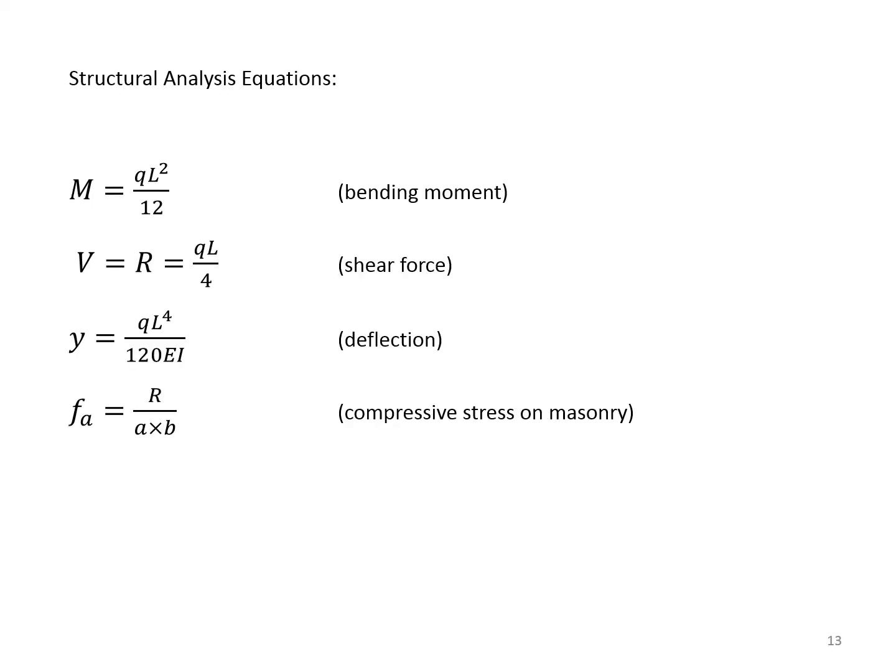The bending moment is M = QL²/12. Q is a triangular load in this case. And V, which is the same as reaction, is QL/4. The deflection is y = QL⁴/(120EI) where E is the modulus of elasticity and I is the moment of inertia of the cross-section. And fa is the compressive stress on masonry, which is the reaction divided by the bearing area A times B.